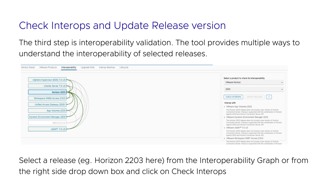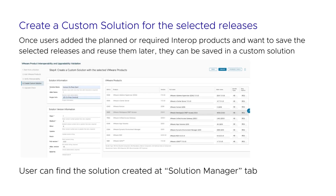Step 4: Create a custom solution for the selected releases. Once users have added the planned or required interop products and want to save the selected releases to reuse them later, they can save them in a custom solution. The following information should be filled before saving: solution information and solution version information. Note: this is all custom defined and this information and version is not related to release product versions. Once filled, click Create to complete. The user can find the solution created at the Solution Manager tab.